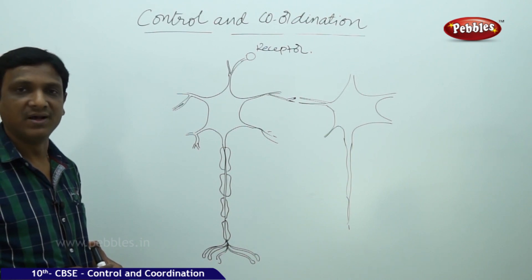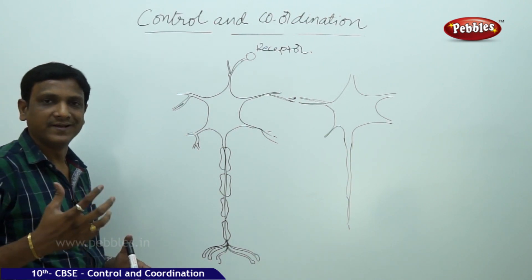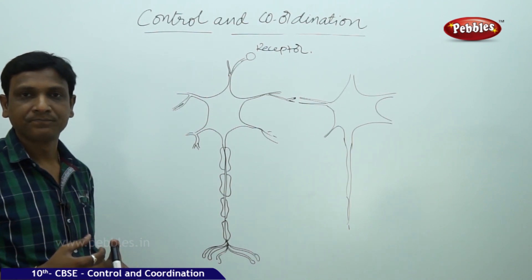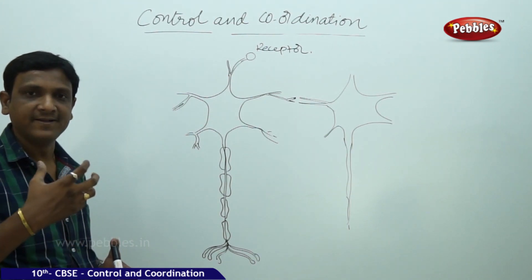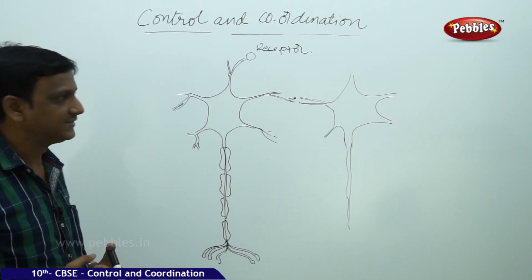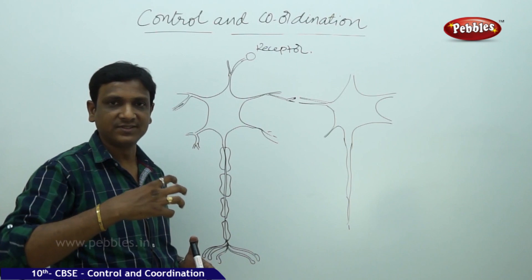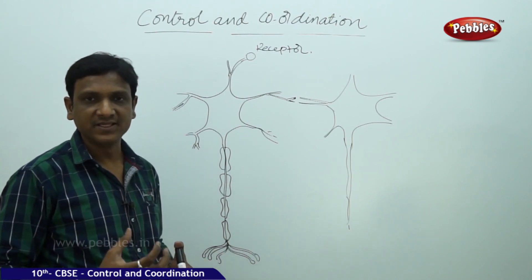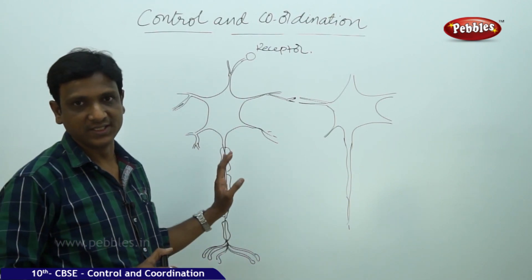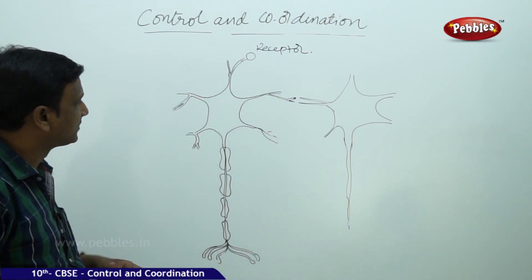For example, internal organs like intestines have smooth muscle tissue. In the same way, the nervous system is made up of nervous tissue, which consists of nerve cells. Here we have the structure of a nervous cell. This wide part of the nerve cell is called the cell body.